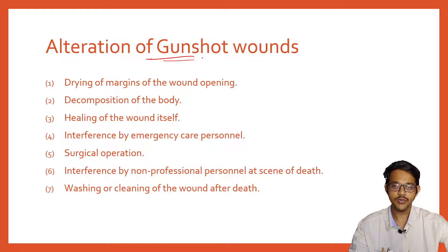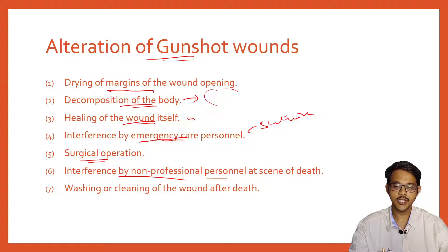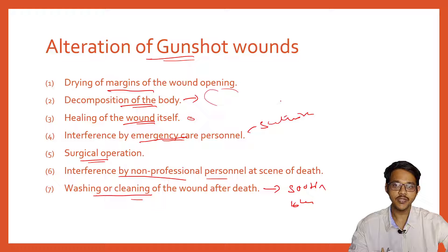Alteration of gunshot wounds may occur through: drying of the wound margins; decomposition of the body causing the entry wound to enlarge or deform; healing of the wound if the person survives; interference by emergency care personnel who may suture the wound; surgical operations on the entrance wound; interference by non-professionals at the scene; or washing and cleaning of the wound, which washes off soot and blackening, making it very difficult to determine the range from which the gun was fired.